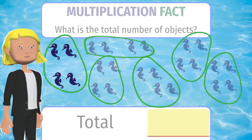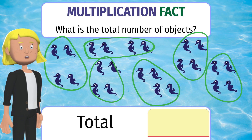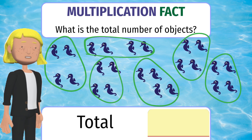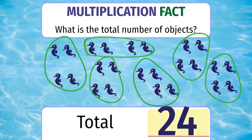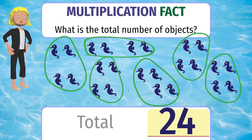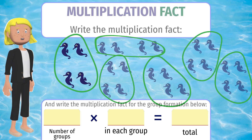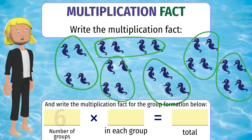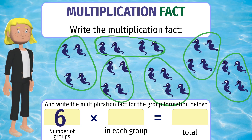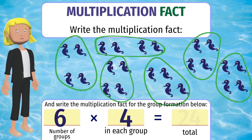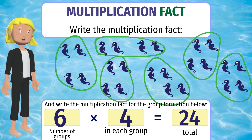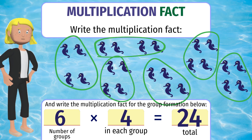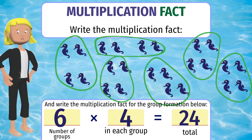What is the total number of seahorses in all? Counting, we get 24. 6 groups, 4 in each group, 24 total. The multiplication fact is 6 into 4 equals 24.